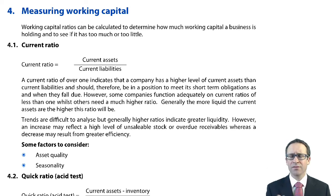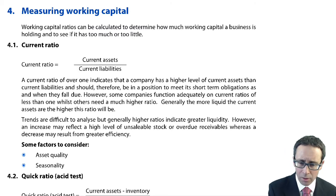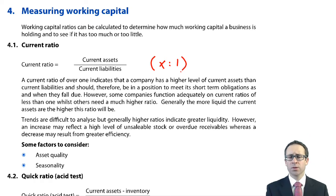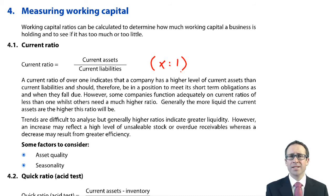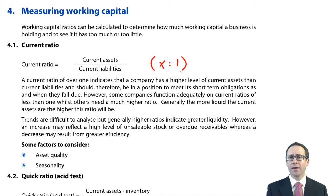First of all, to measure working capital — or essentially to measure liquidity — we can look at the current ratio. It's a simple ratio that measures how many times current assets cover your current liabilities, expressed as X to one. Current assets include inventory, receivables, and cash. Current liabilities include trade payables, interest payables, dividend payables, and tax payables. You would like an excess of current assets over current liabilities, so ideally it should be greater than one, which tends to mean the business is liquid.